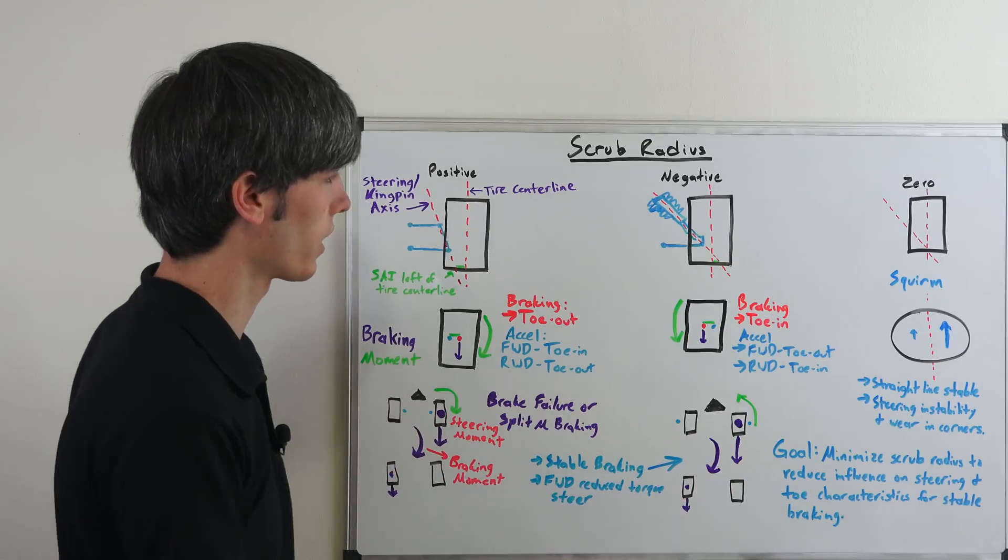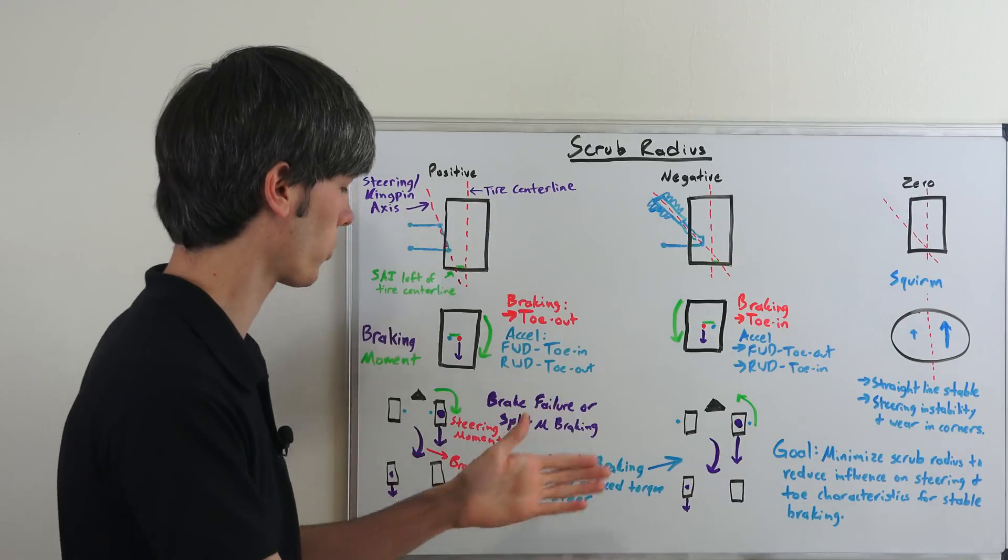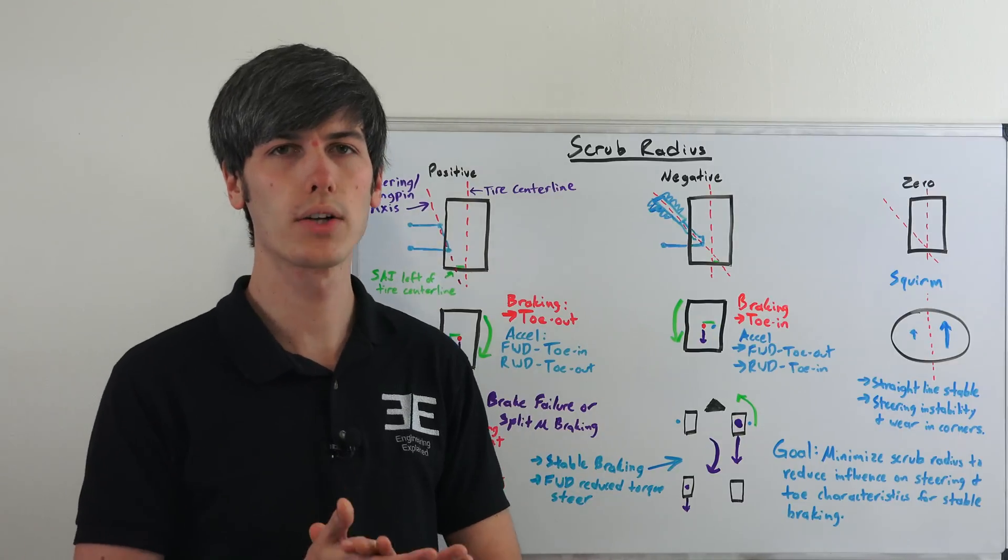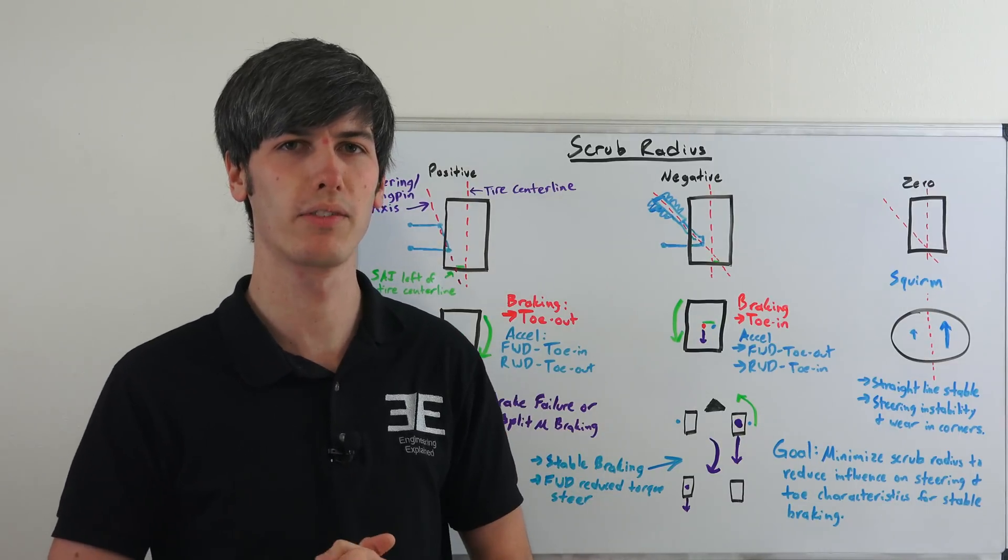Where you're going to want to have a negative scrub radius in order to help keep it straight versus having it like this where it's going to want to veer to a different direction. So thank you guys for watching and if you have any questions or comments feel free to leave them below.